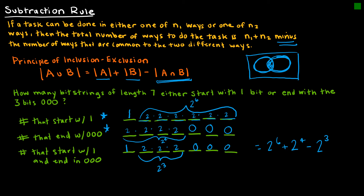Working out the calculation: 2 to the 6th is 64, 2 to the 4th is 16, and 2 to the 3rd is 8. Adding 64 and 16 gives 80, and 80 minus 8 is 72. So there are 72 different bit strings, because there were 8 strings counted in both the set that starts with 1 and the set that ends with 0,0,0.